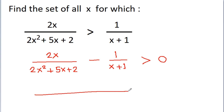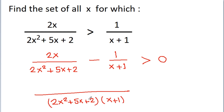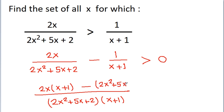Now, if we take (2x² + 5x + 2)(x + 1) as the common denominator, then we get 2x(x + 1) minus 1·(2x² + 5x + 2) in the numerator, all greater than 0.